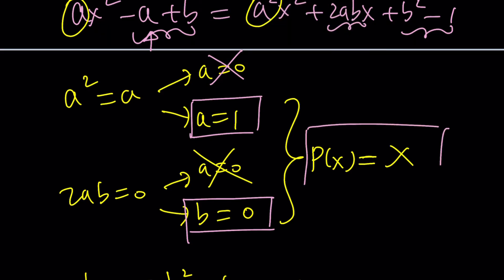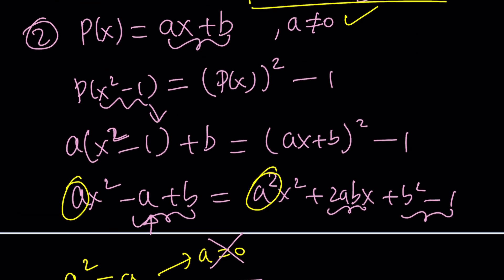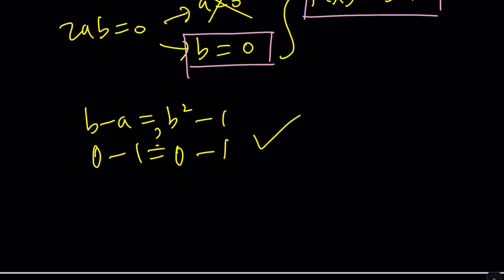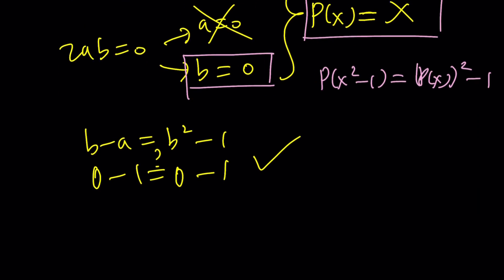But what does that mean? We already found some constants and now we found that linear solution. And if you think about the original problem, you'll notice quickly that it actually satisfies the equation. That should kind of be obvious because if p of x is x, then p of x squared minus 1 is going to give us x squared minus 1. And this is also going to give us x squared minus 1. So they're always equal. It does make sense.